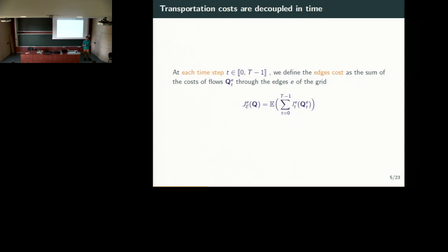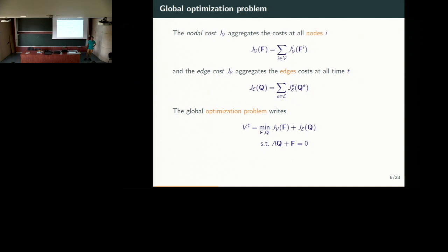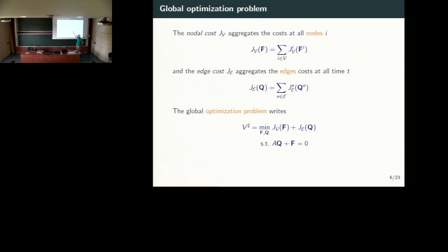Now let's gather the two problems. We consider the global cost on nodes, denoted by GV, and the global cost on edges. What we want to do is to minimize the cost on nodes plus the cost on edges by satisfying the coupling constraints which correspond to the Kirchhoff current law. So that's the problem we will deal with — we have two main problems: the problem on nodes and the problem on edges, and a unique coupling constraint.